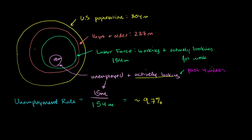How do they know whether these 15 million people have actively searched in the past four weeks? The answer is they do a survey — not of every person, but of about 60,000 people every month. They ask: are you employed? If unemployed, have you looked for a job in the past four weeks? If yes, you're counted as actively looking and remain part of the labor force.